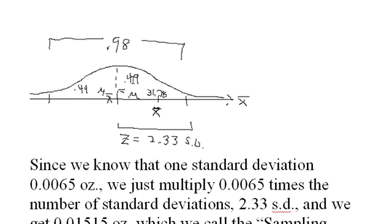Now since we know that 0.49 is here and 0.49 is here, we can look this up in the Z table and we can find that this distance from here to here is 2.33 standard deviations.